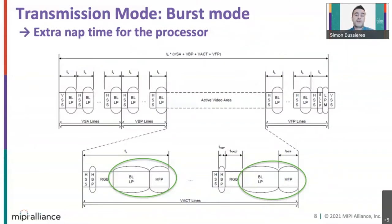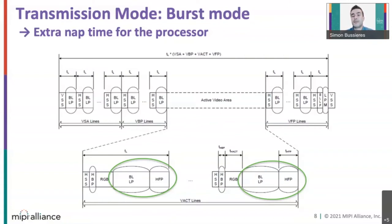Some displays, notably those with compression, contain at least an input line buffer and can receive data faster than real time. If the PHY speed is adequate, faster than real time can give the PHY time to power down or simply suspend data transfer, stopping switching in order to save power. See the enlarged horizontal blanking period at the bottom — it does not require data transfer.